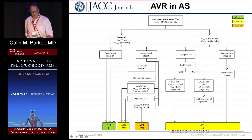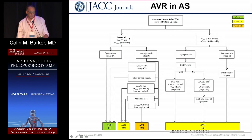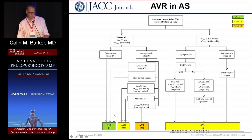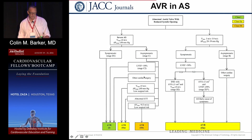When do we refer for aortic valve intervention for aortic stenosis? In patients with defined severe AS who are symptomatic, it's a no-brainer — they go for a new valve. If they're asymptomatic but their EF has dropped with severe AS, that's a Class I indication to intervene. Similarly, if they're going for other surgery such as bypass and are found to have severe AS, that's obviously a reason to address the valve at the same time.